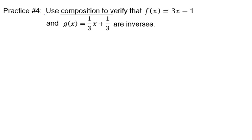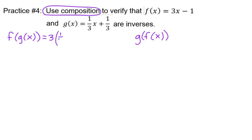The key is to use composition. We're looking to see that f of g of x equals x if they're inverses, and that g of f of x equals x as well. So f of g of x would put g on the inside, so that would be three times one-third x plus one-third, and then minus one to finish off the f function. Distribute the three, combine the like terms, and we do get x.